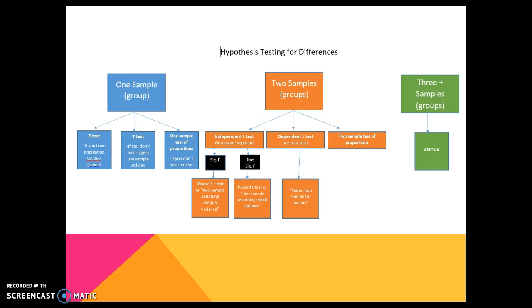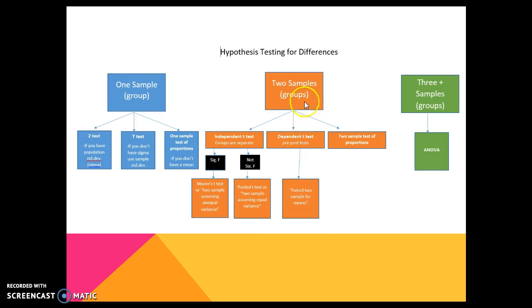At this point we have a lot of different options, some of which we haven't even talked about yet — those will be in further videos. If we have a research question looking for differences, the first thing to figure out is: is it one sample compared to the population, two samples, or three or more groups? If one sample, we have the z-test and t-test, with proportions coming later. For two samples — what we covered today — is it independent? If the F-value is significant, use Morse; if not, use the pooled t-test. If the two groups are pre-post, they are dependent. We will be adding proportions and ANOVA in further videos.